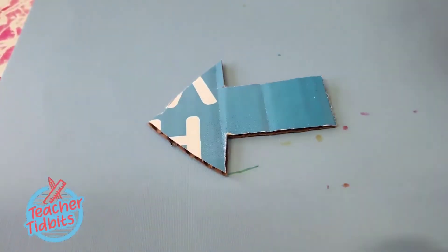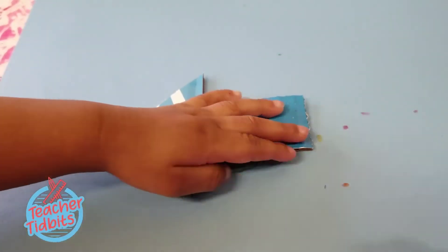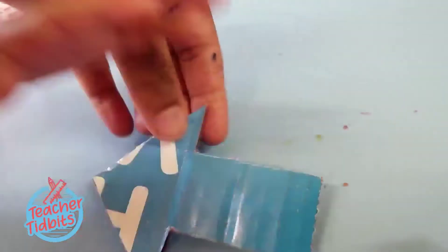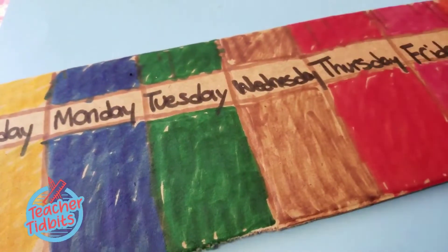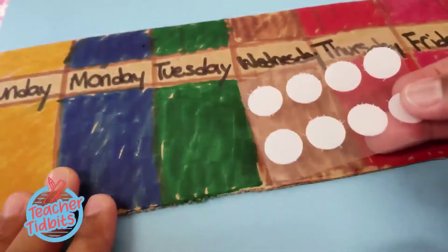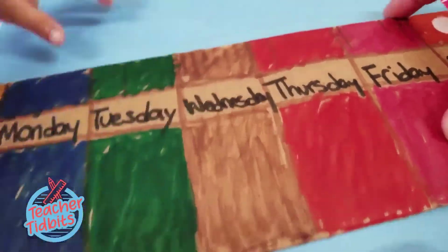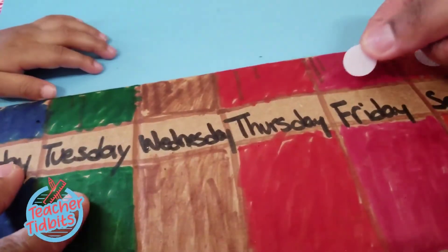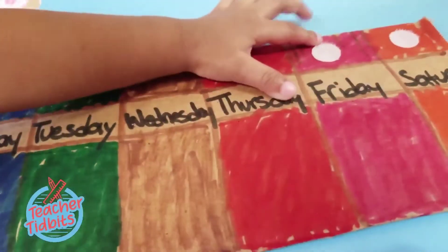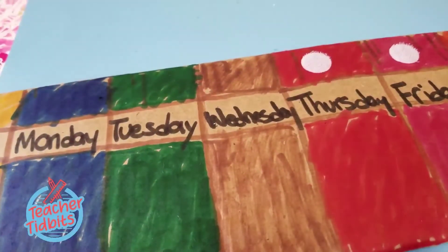Now that that's done, I'm going to add some velcro to the back of the arrow. I actually picked up these individual velcro circles from Walgreens. I'm going to add one, the soft side, onto the arrow and then I'm going to go ahead and add a piece of velcro to each day of the week. As you can see my little one-year-old is very eager to get her hands on the arrow, but that's what this is all about — getting your children excited about learning.